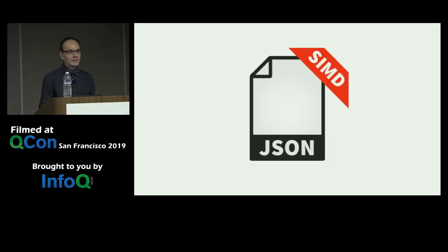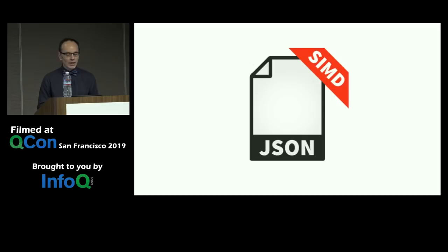My name is Daniel Lemire, from the University of Quebec. I'm going to talk about parsing JSON really quickly. I'm one of the authors of what might be the fastest JSON parser in the world, and I'll tell you about the strategies and tricks we've built to make this possible.